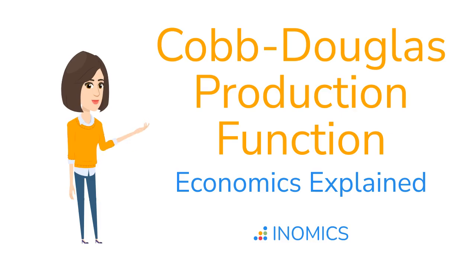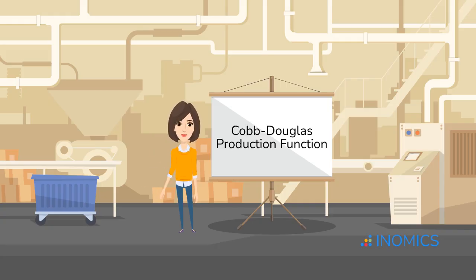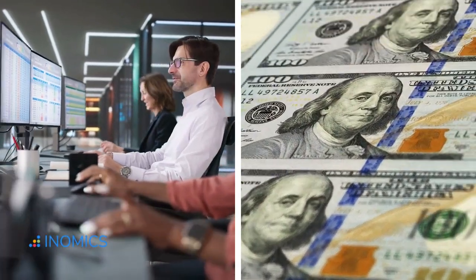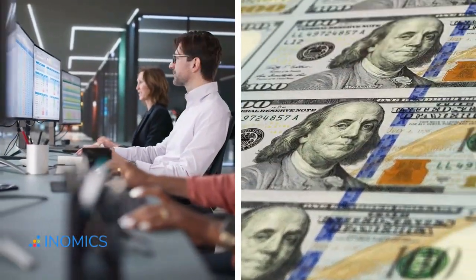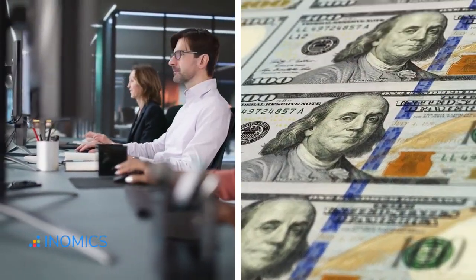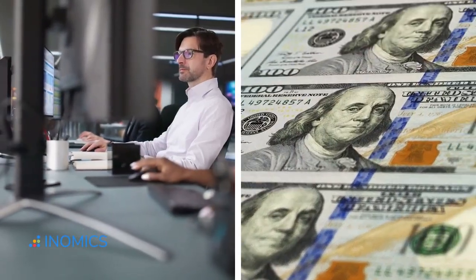Welcome back, economists! Today we're diving into one of the most famous and elegant tools in production theory: the Cobb-Douglas Production Function. It's a model that captures how firms transform inputs, like labor and capital, into output, and it's been shaping how we understand growth, productivity, and efficiency for over a century.